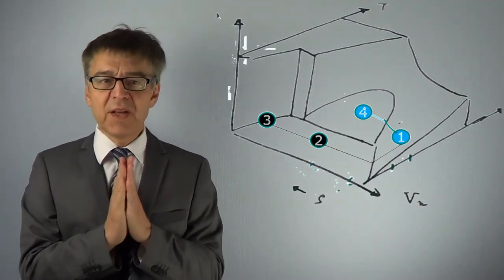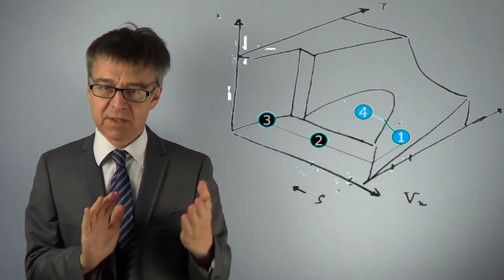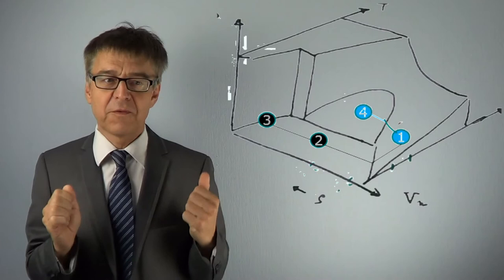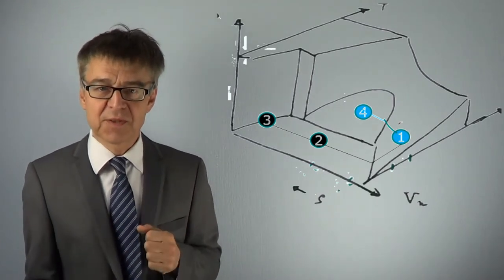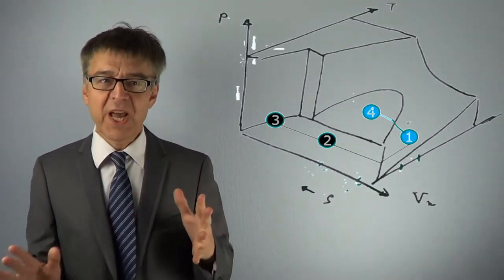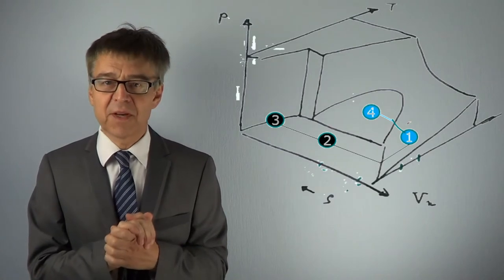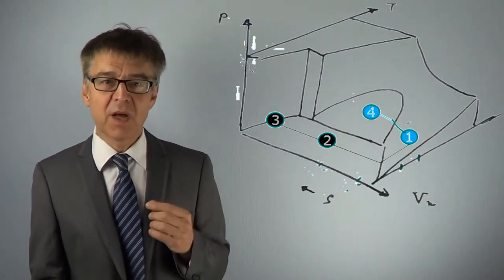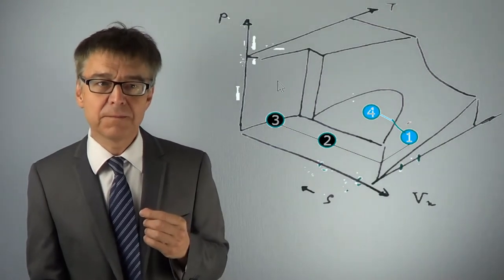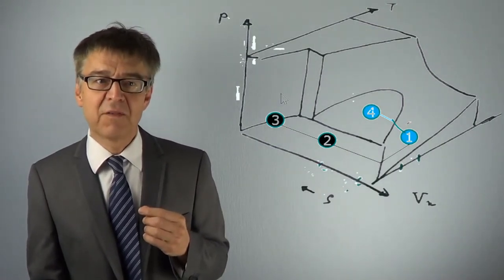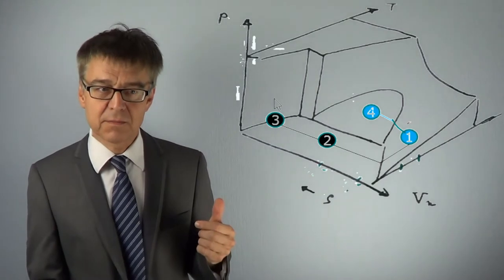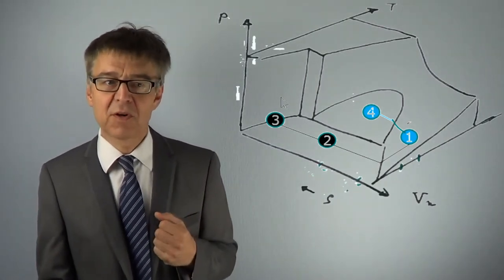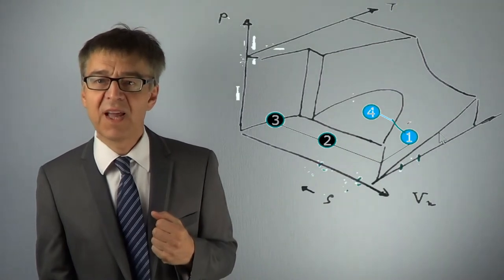When dealing with phase diagrams, it is useful to look first for the homogeneous regions. Which areas correspond to single phase states? Low molar volume and low temperature are characteristic for the solid phase.